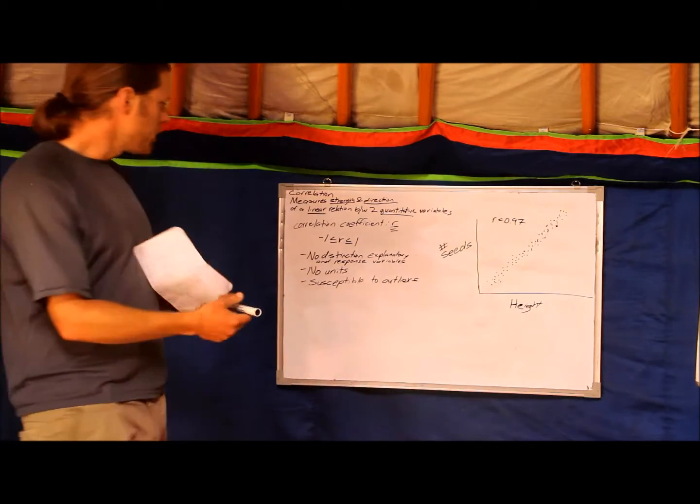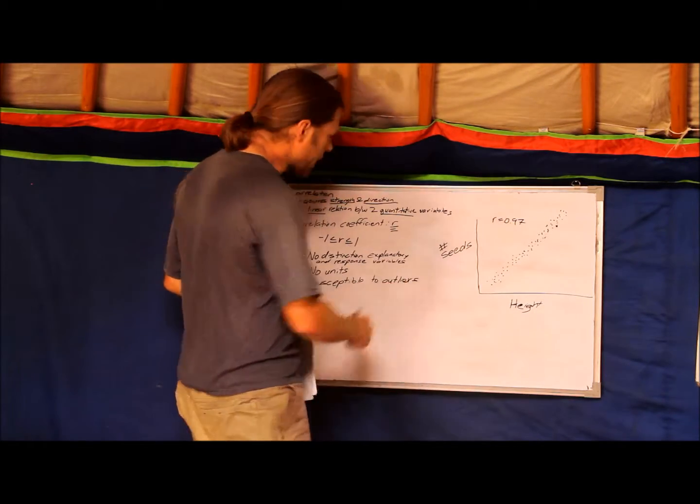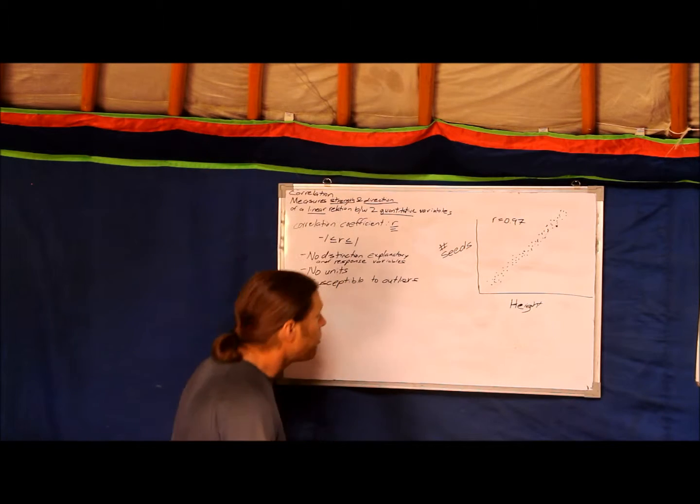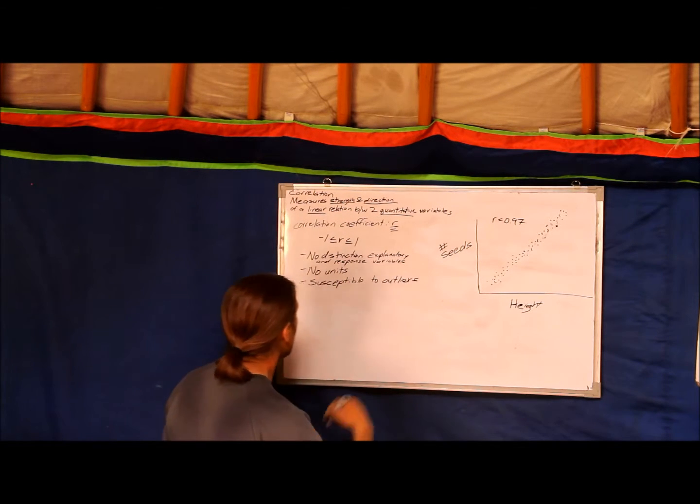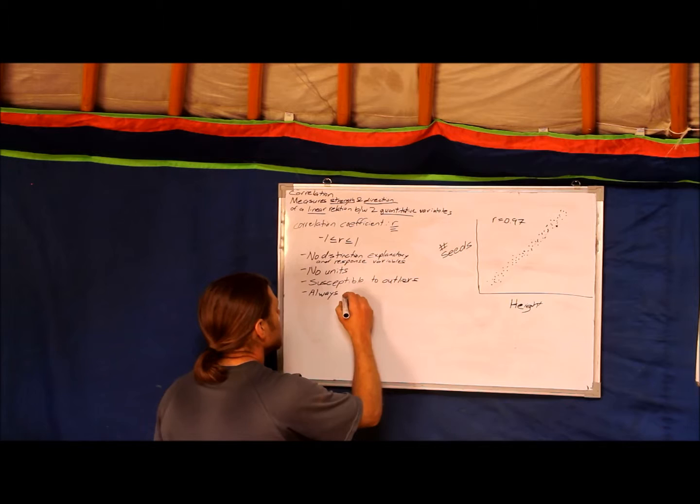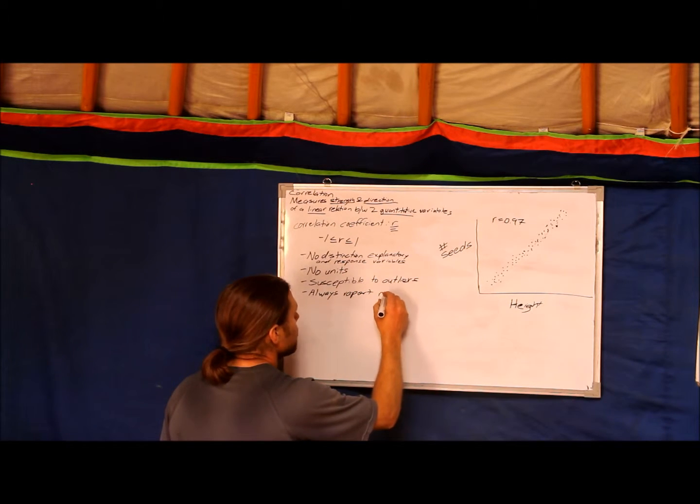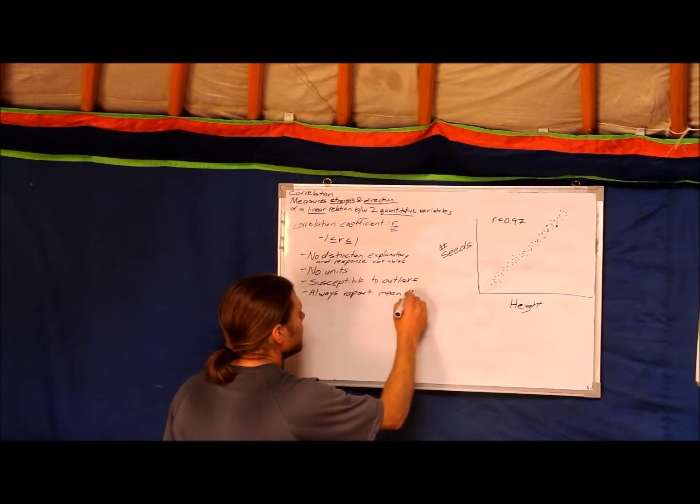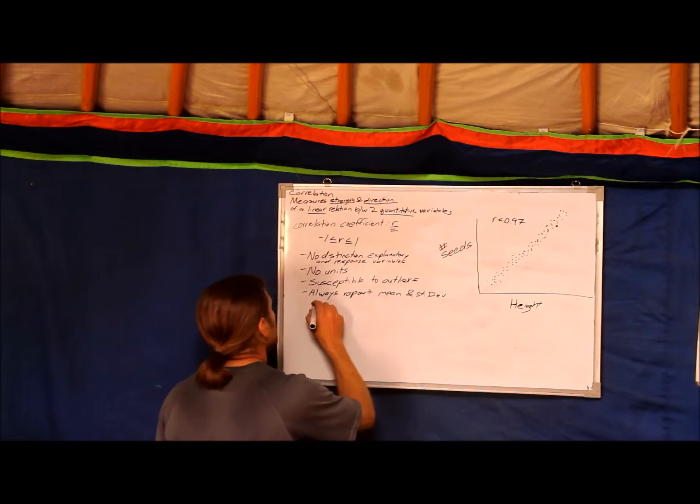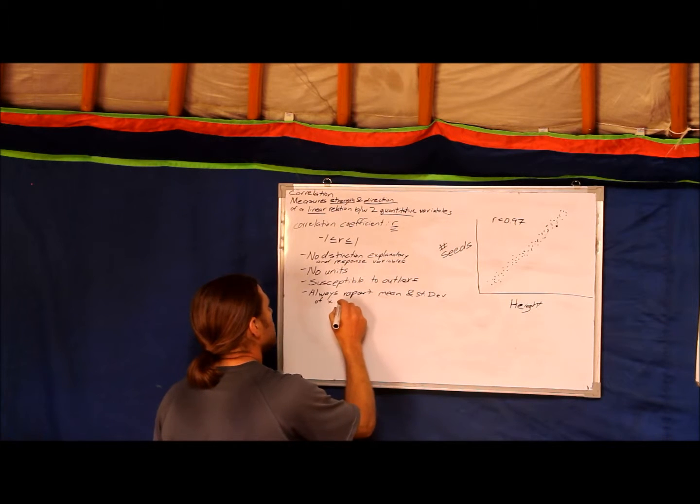Continuing where we left off, I was saying that they're susceptible to outliers. The next thing you need to consider is that whenever you report correlation, you'll always need to report the mean and standard deviation of the two variables you're measuring, of X and Y.